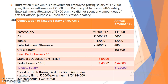Let us look at Illustration 2. Mr. Amit is a government employee getting a salary of Rs. 12,000 per month, DA allowance of Rs. 500 per month, bonus equal to 1 month's salary, and entertainment allowance of Rs. 400 per month. He did not spend any amount out of this for official purposes. We are asked to calculate his taxable salary. We will make the heading: computation of taxable salary of Mr. Amit, with the next column as annual amount.